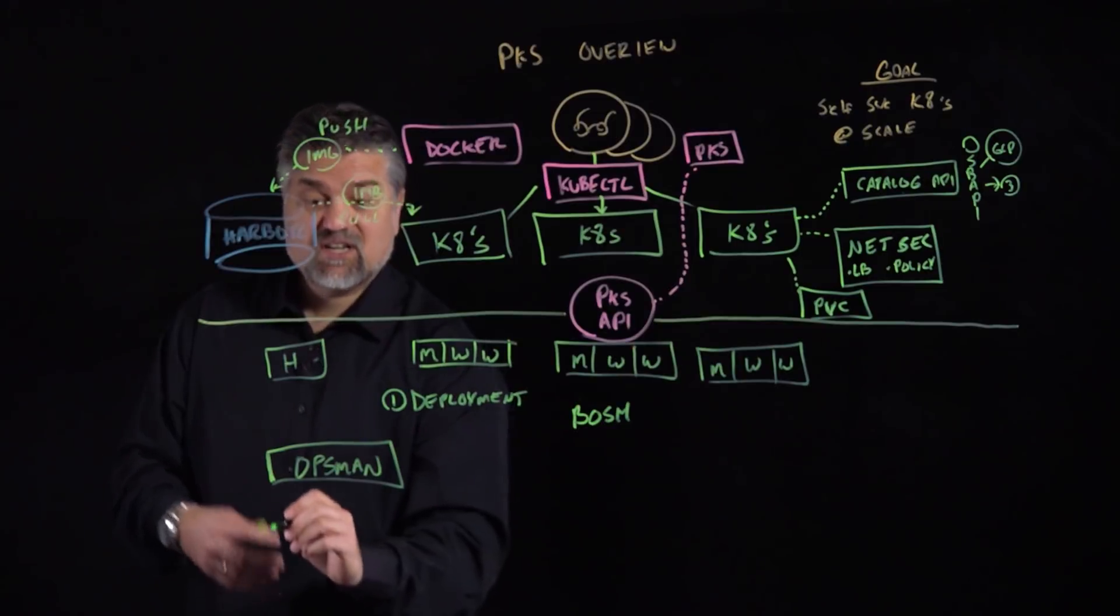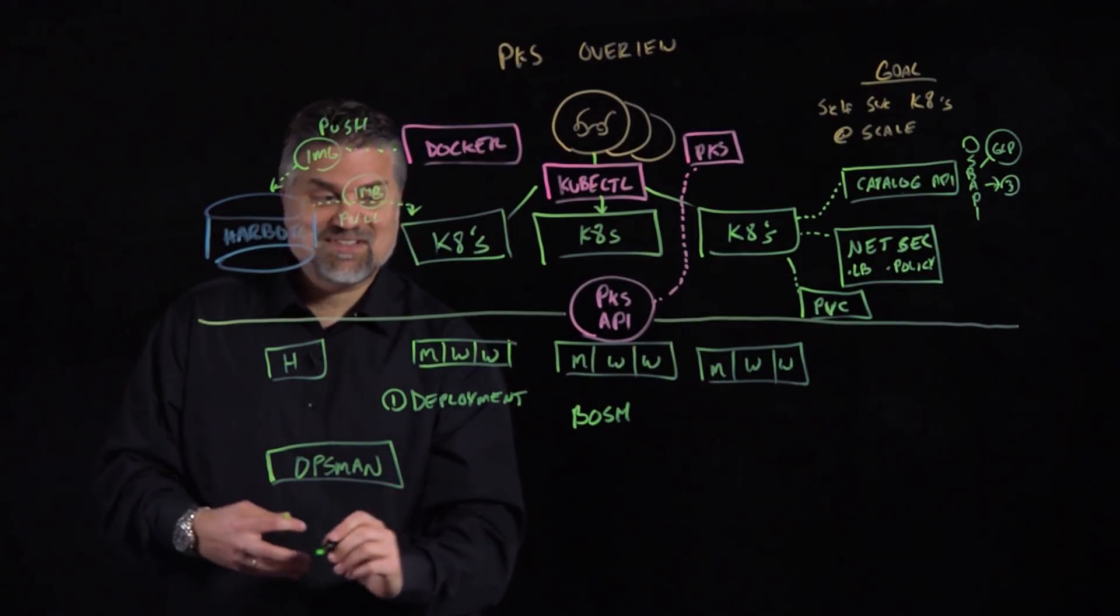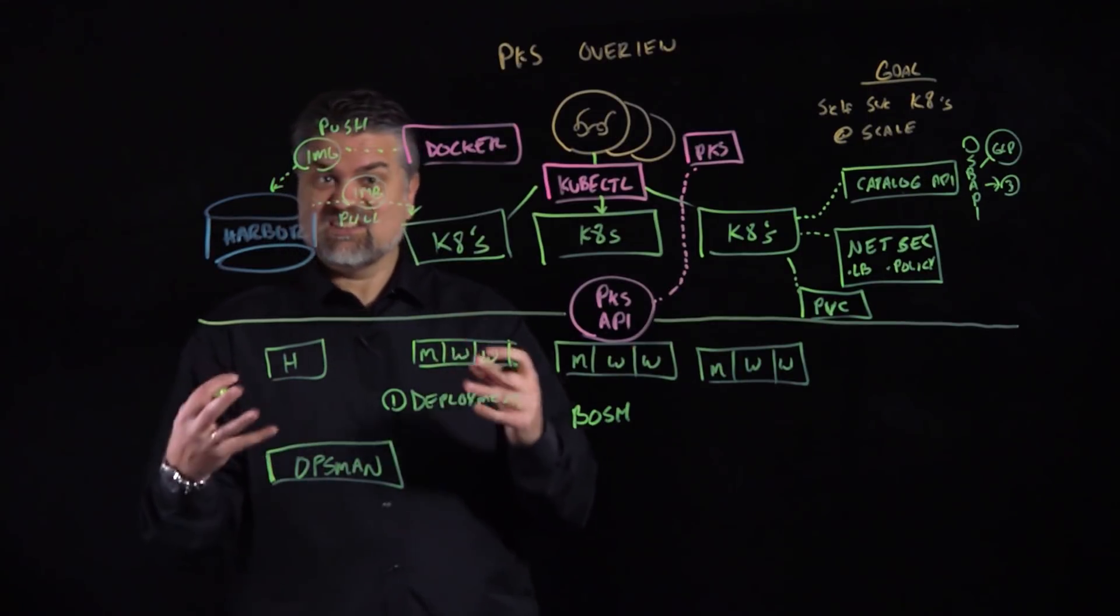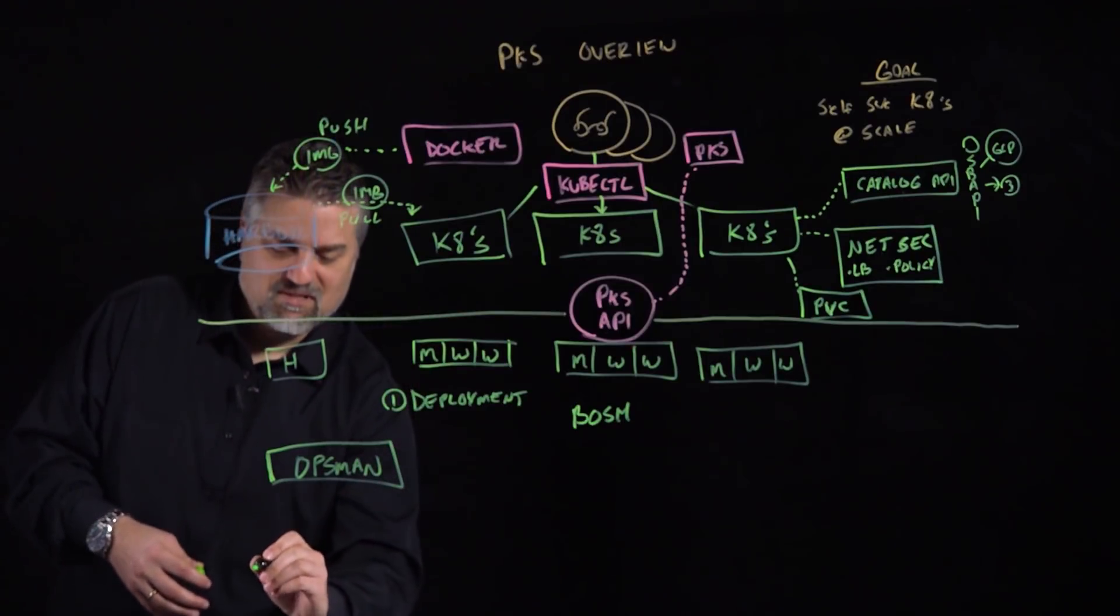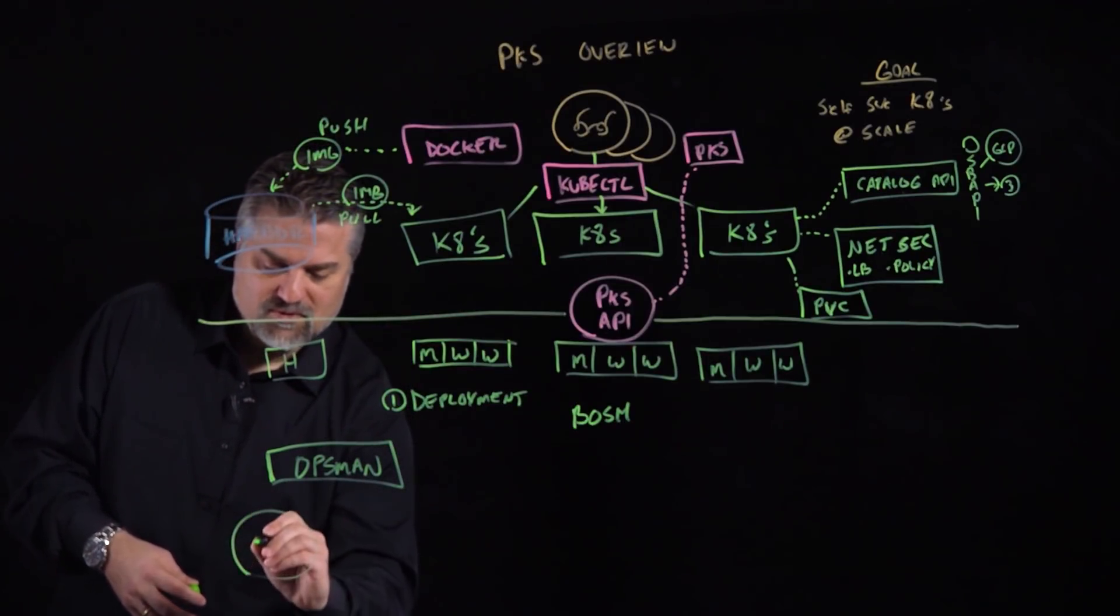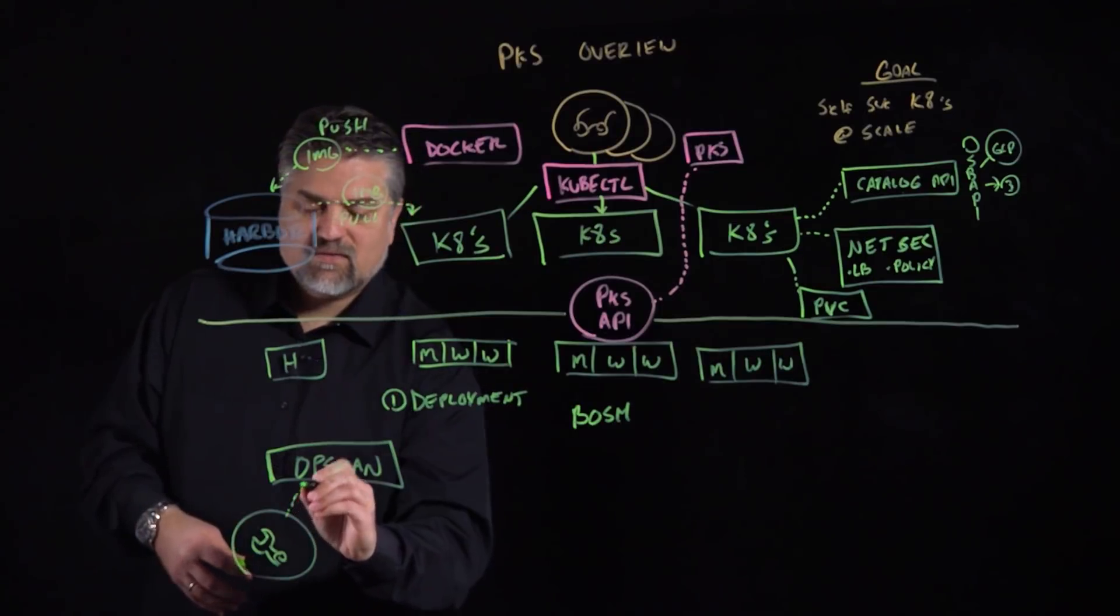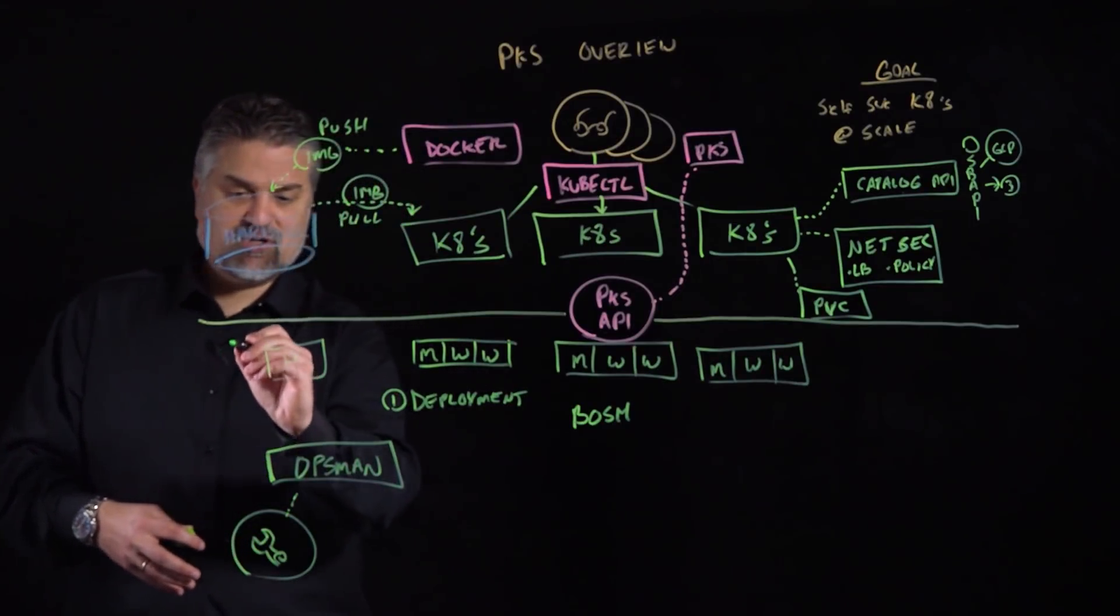And that's a tool that's actually used by another persona that's really important when we talk about PKS and delivering this agile service to our development teams. And that other persona we'll use with a wrench here. That other persona is the operator, the platform reliability engineer. They use Opsman to interact with Bosh.